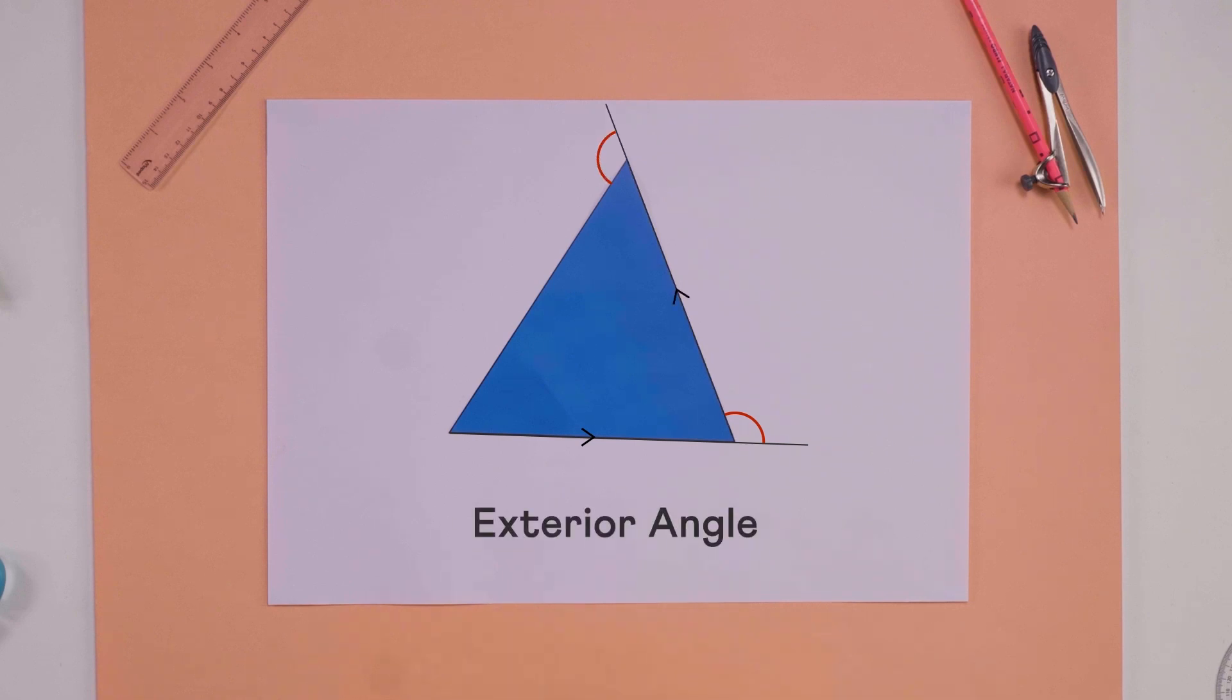Let's extend the other side. This angle is also its exterior angle. And one more. We could extend these lines in the other direction as well. These are also its exterior angles.